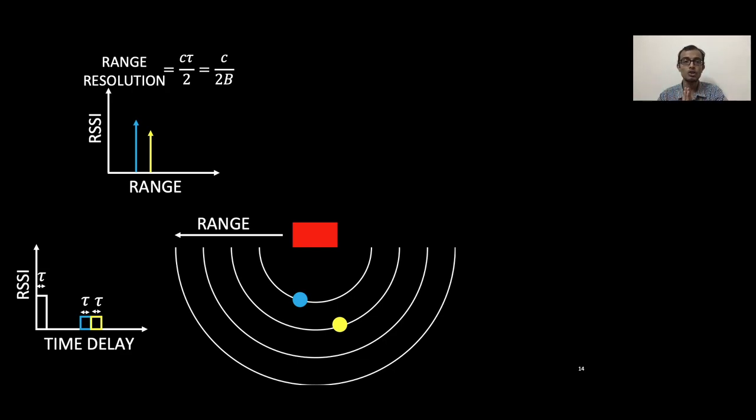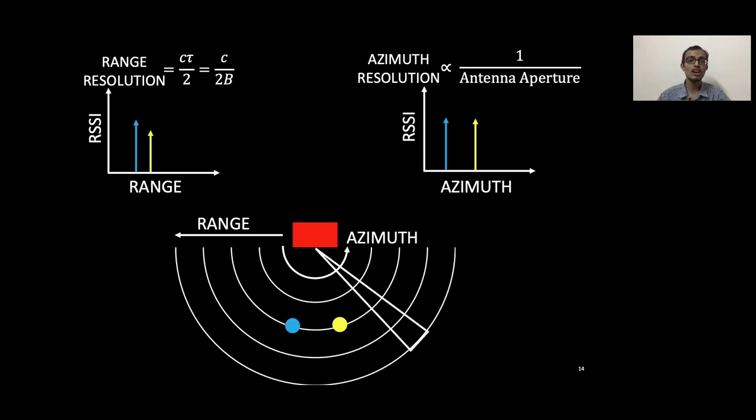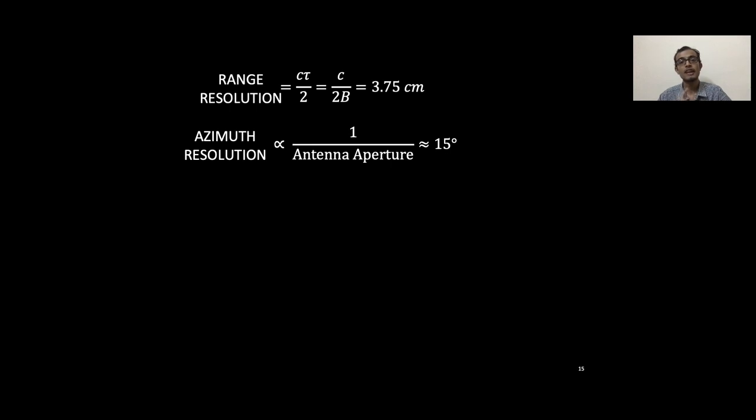Because pulse width and bandwidth of any signal is inversely related to each other, the range resolution has this popularly known formula of c by 2B. Other fancier radars can also localize targets along the azimuth or the elevation axis. They do so by just using antenna arrays. Longer the length of this antenna array, finer the beam becomes and finer the azimuth resolution. For our case, we have 4 gigahertz of bandwidth in millimeter wave frequencies and an azimuth resolution arising from 8 antennas of 15 degrees.